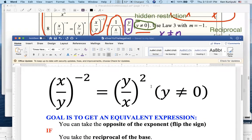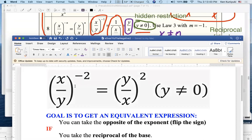Well, let's look at a more difficult example: x over y all to the negative two. Similarly, this can be rewritten as y over x all to the positive two, where again, y not being zero is a hidden restriction.